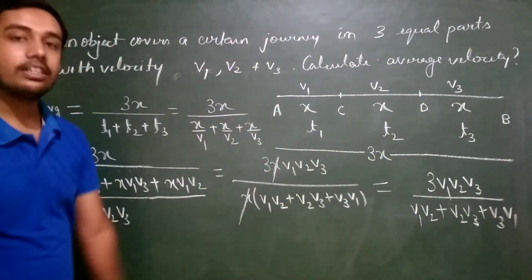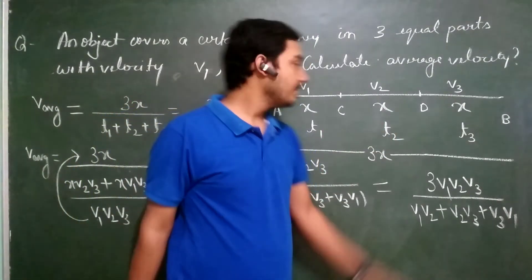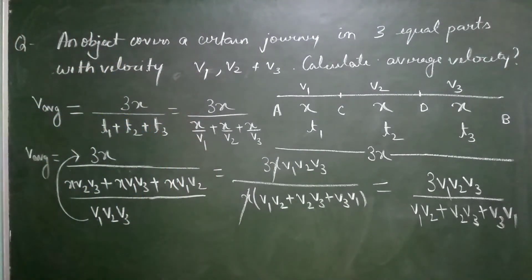This is the average velocity when the object covers a certain distance in 3 equal parts with velocity V1, V2 and V3. I hope it is clear to you and I hope you have done it correctly. Thank you.